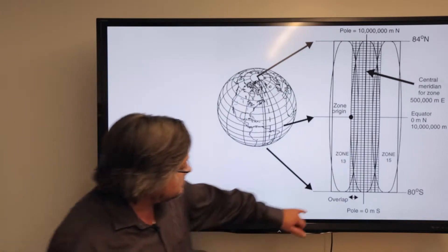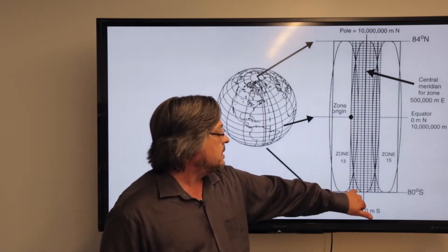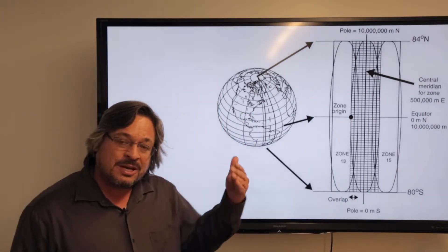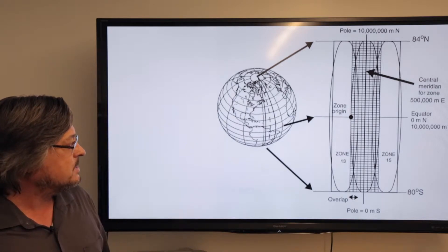You can also see that there's a little bit of an overlap between the two zones, so if you get a location that is near the edge of a zone, you can get coverage in two zones as well.